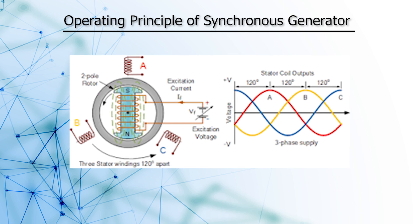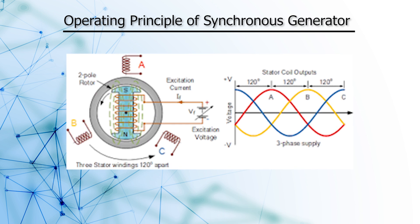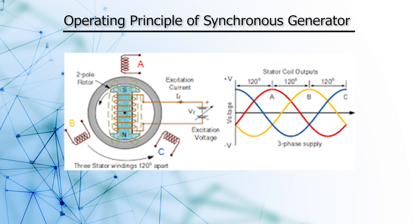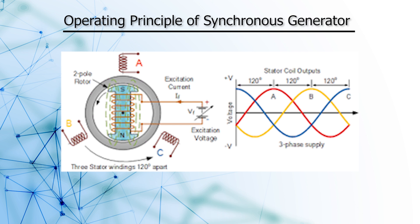The related graph shows three sinusoids — blue, red and yellow — representing the different phases. The red one is phase A, yellow is phase B, and blue is phase C. The relative displacement between these phases is 120 degrees — the maximum of phase A is displaced from the maximum of phase B by 120 degrees, and similarly from phase B to phase C by 120 degrees. This is the three phase supply.